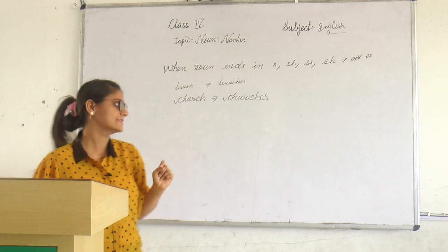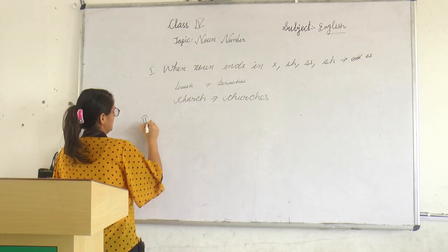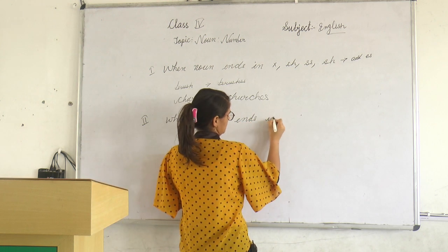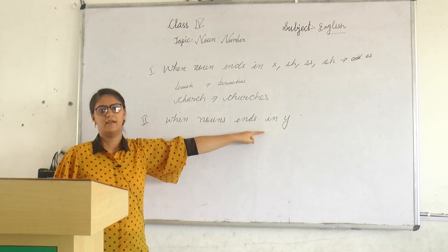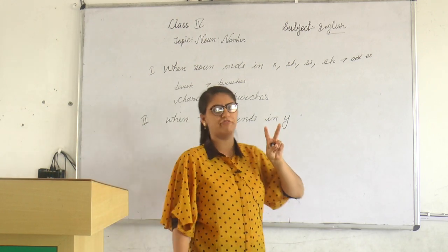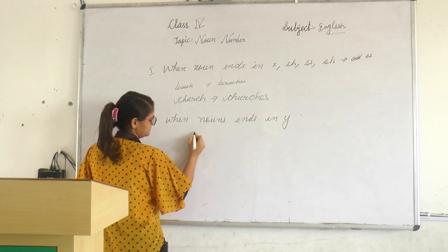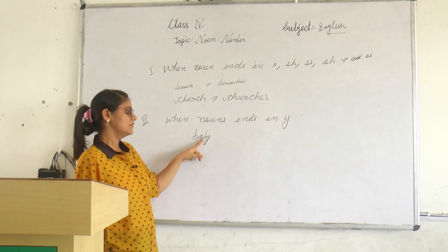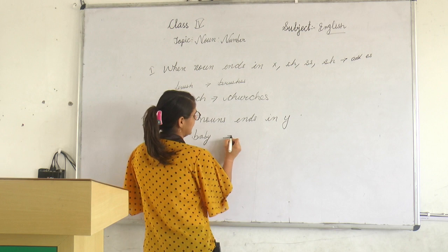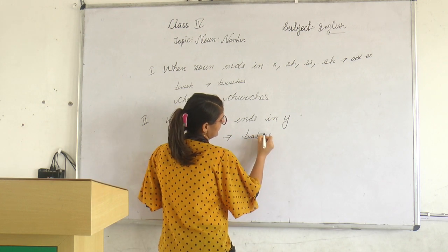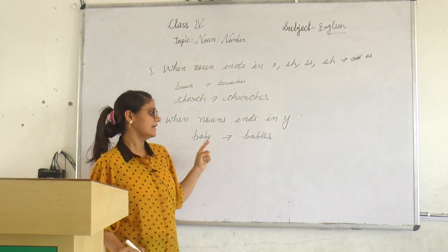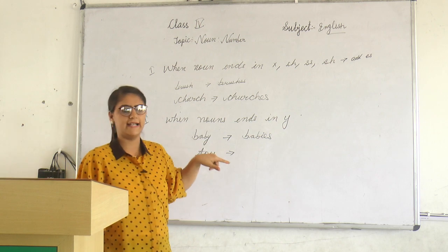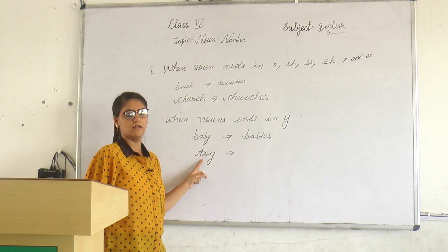The second rule is for nouns ending in Y. There are two different cases. If the noun ends in Y and before that Y there is a consonant — like baby, where B is a consonant — we make it plural by writing IES in place of Y. In the other case, like toy, the noun also ends in Y but before the Y there is a vowel — O is a vowel.